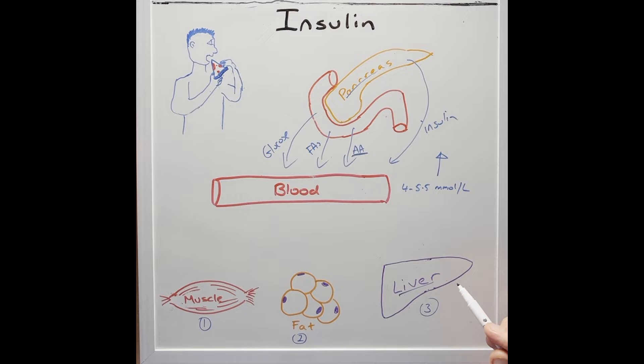Across in the liver, insulin helps the glucose like we saw in the muscles to be stored as glycogen. But in addition, insulin helps the liver to make the glucose into fatty acids.